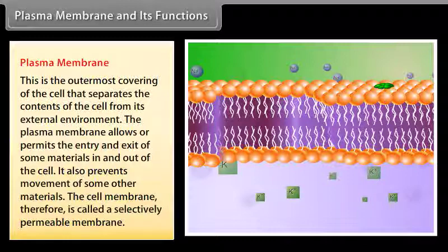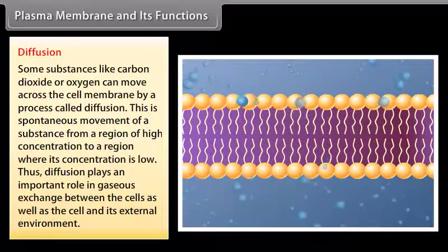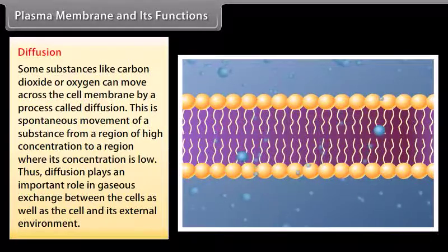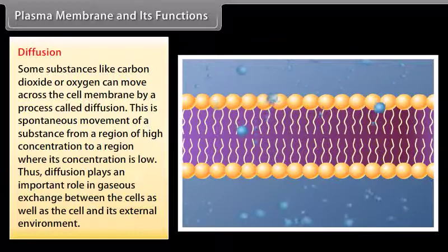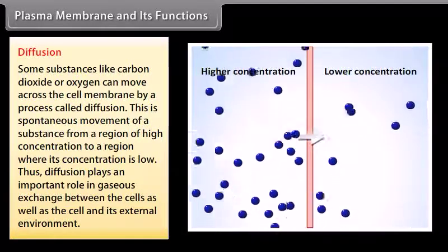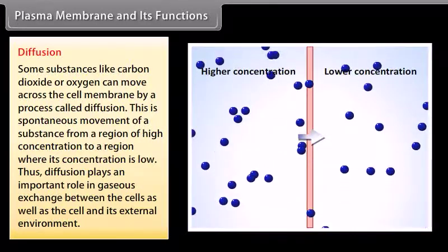The cell membrane is therefore called a selectively permeable membrane. Diffusion: some substances like carbon dioxide or oxygen can move across the cell membrane by a process called diffusion. This is the spontaneous movement of a substance from a region of high concentration to a region where its concentration is low. Thus diffusion plays an important role in gaseous exchange between the cells as well as between the cell and its external environment.